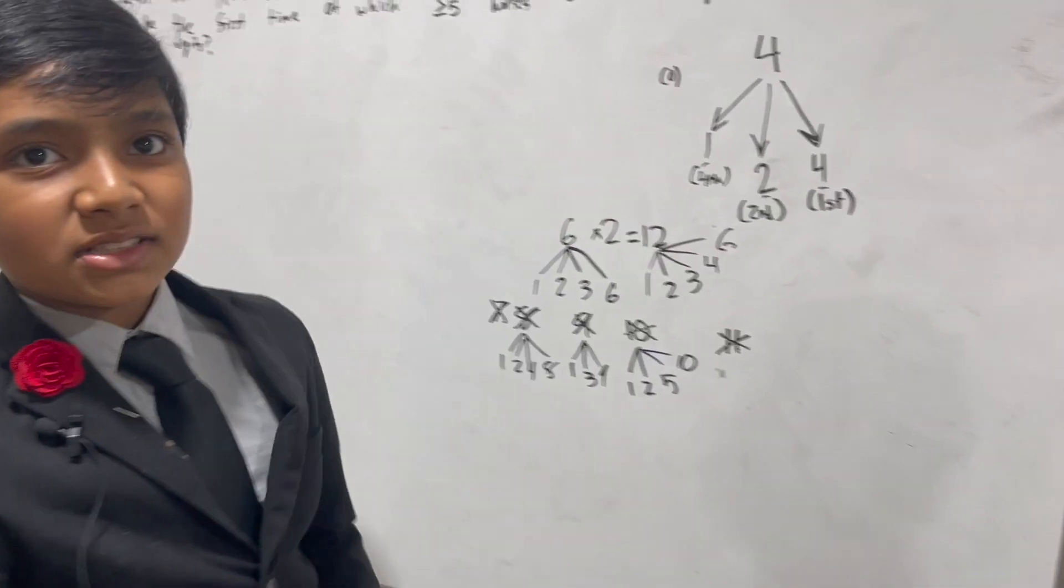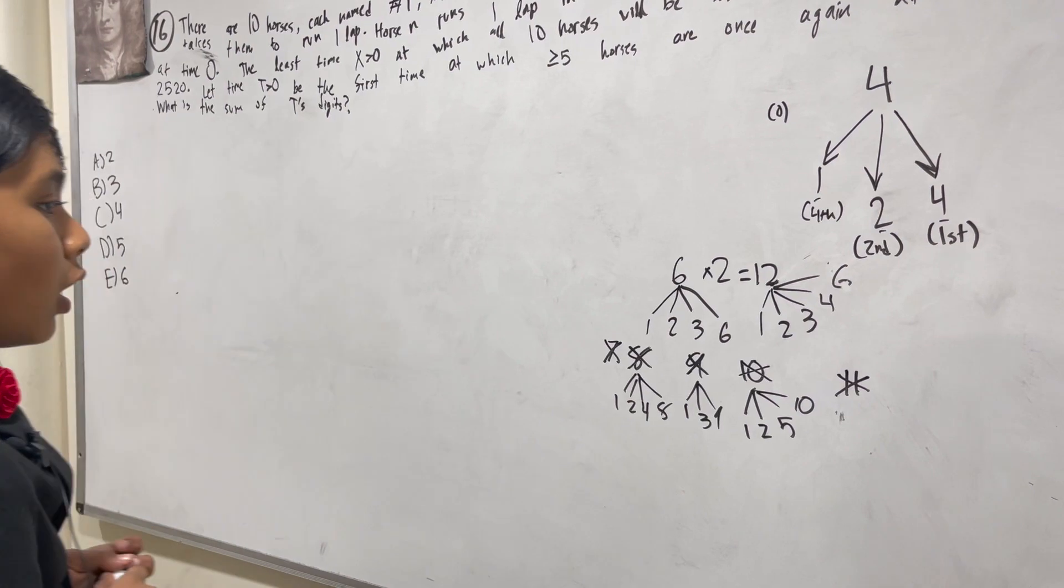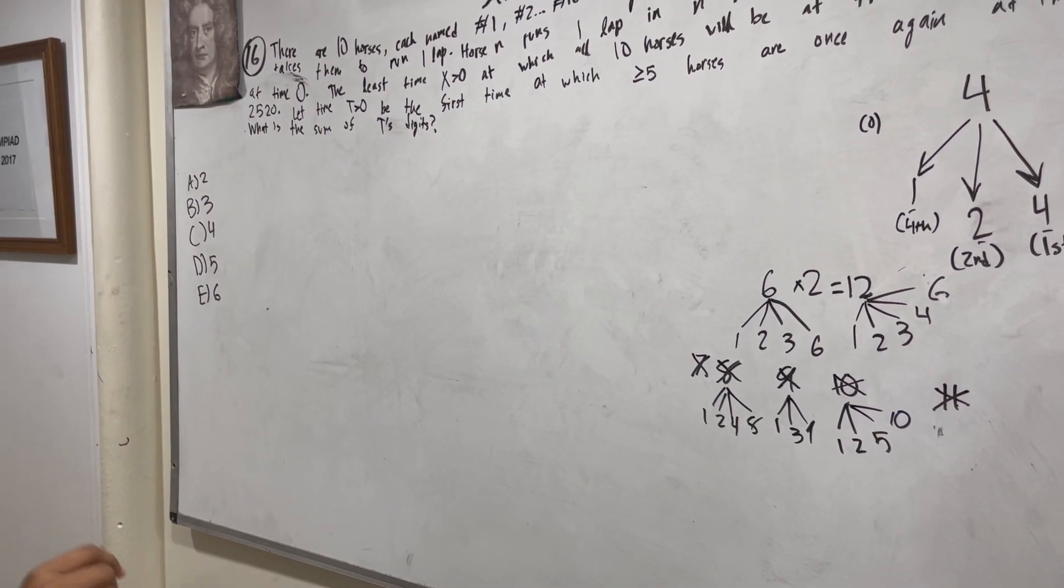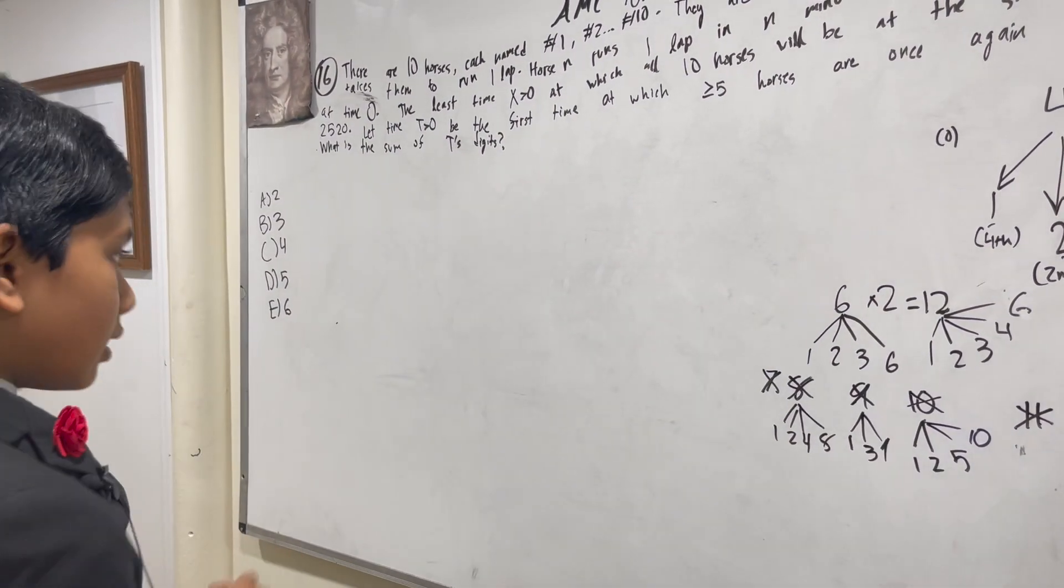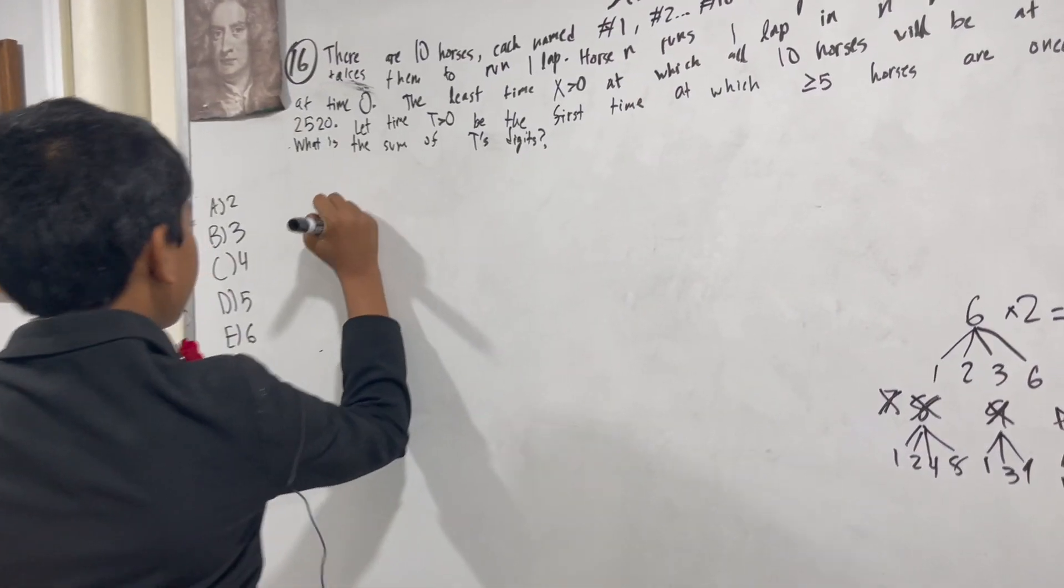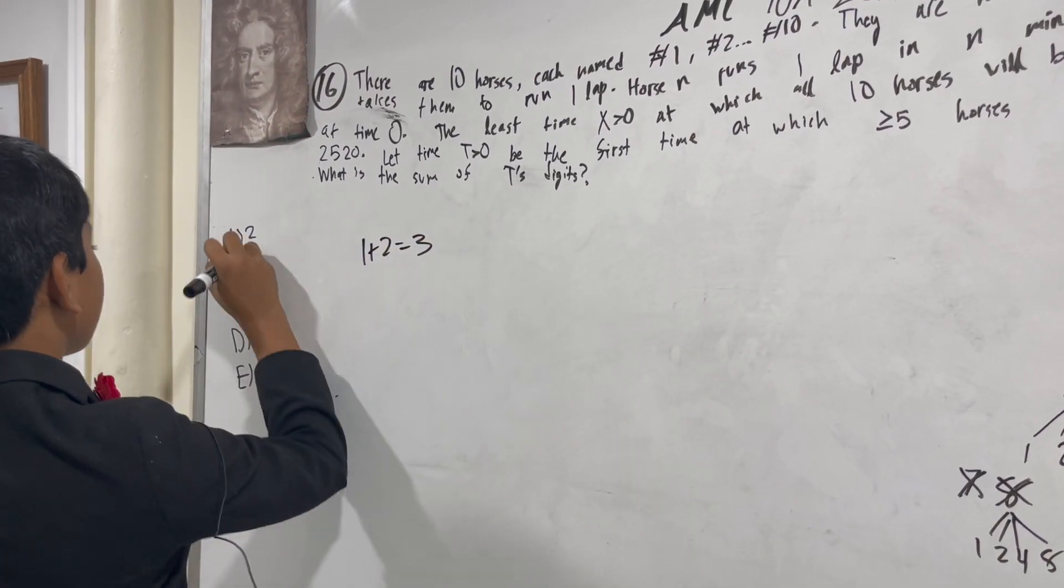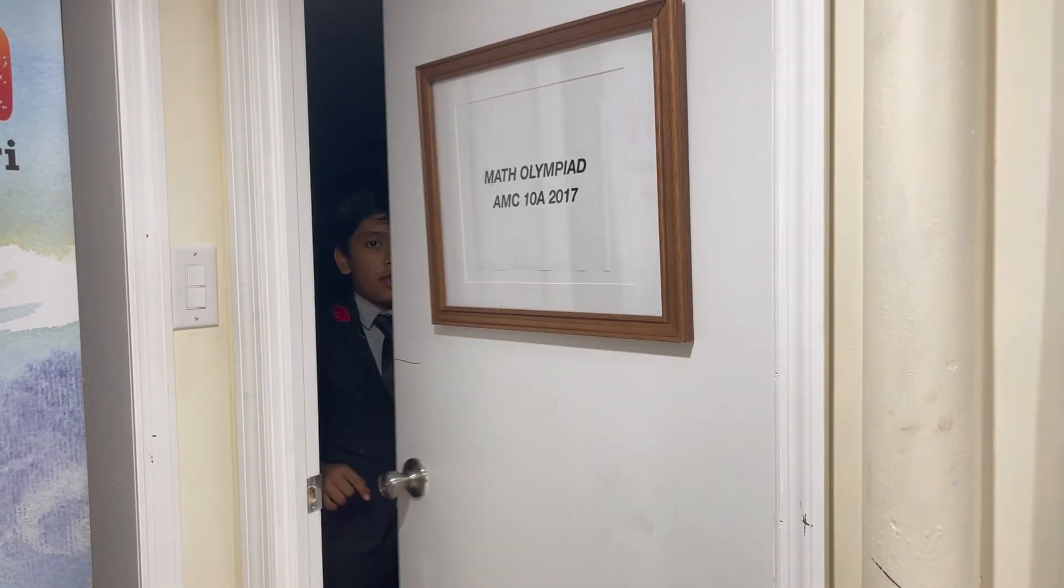That means that twelve is the smallest positive integer with at least five positive divisors under ten. And the sum of twelve's digits is obviously three. So that's the answer. Thank you everybody for watching!